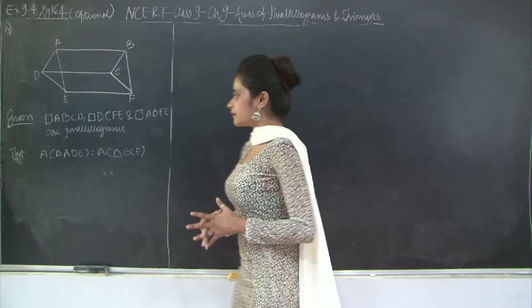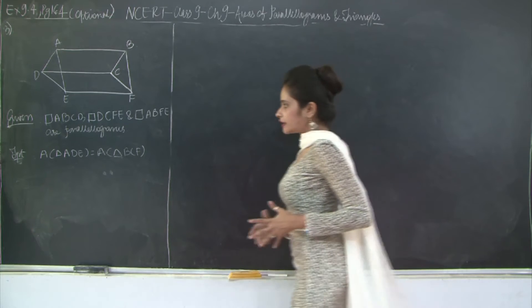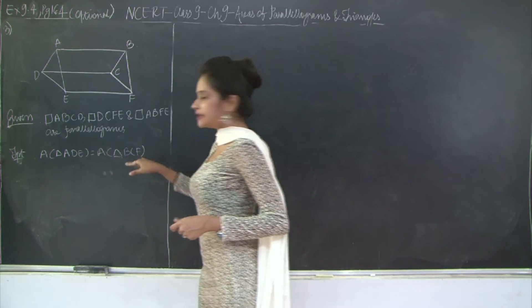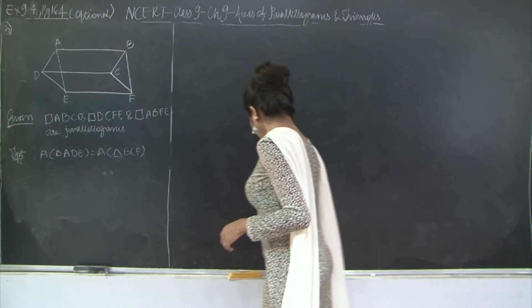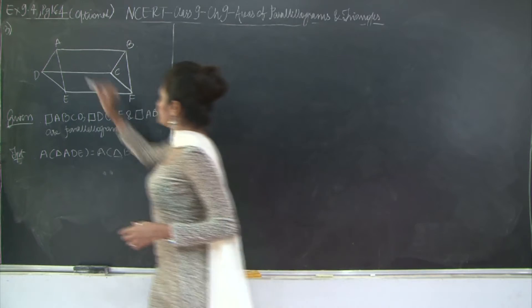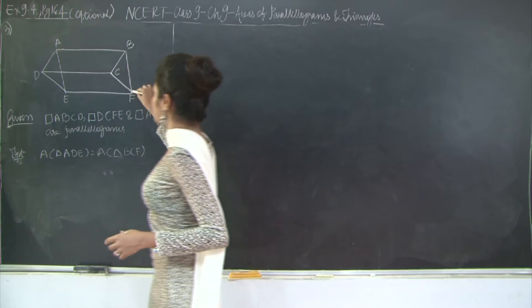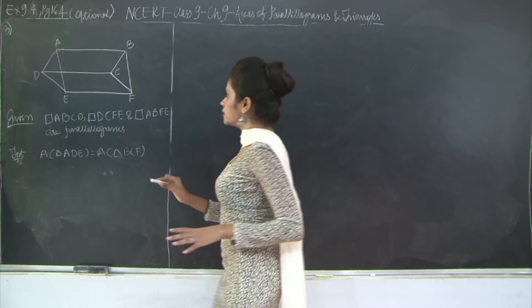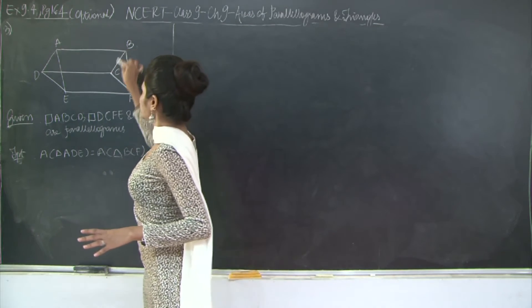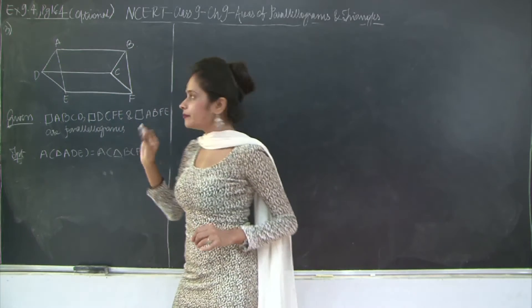You need to prove that the area of triangles ADE and BCF are equal. So let's see, ADE and BCF. I have ADE and BCF. Very simple question.